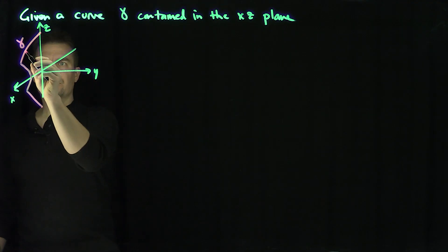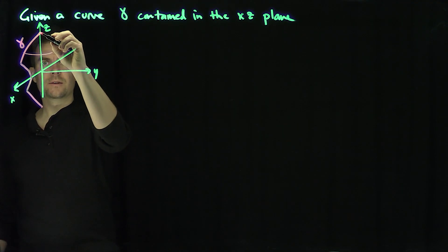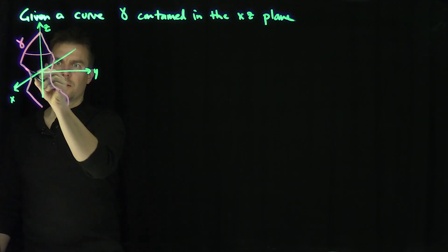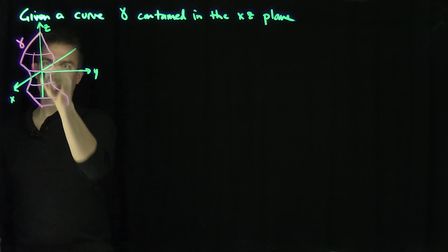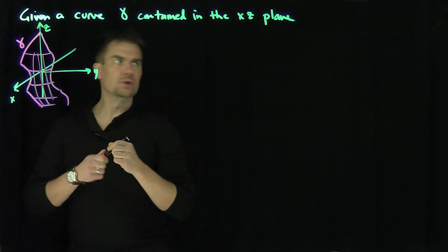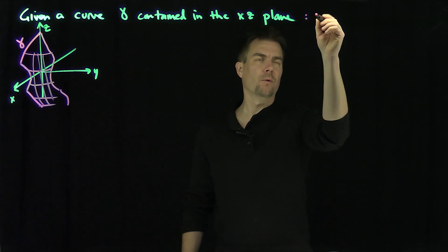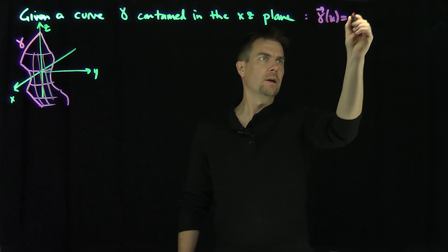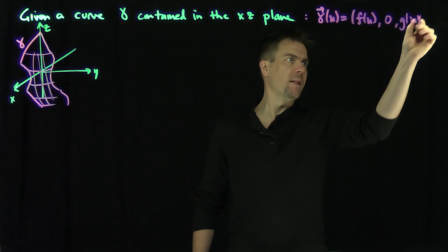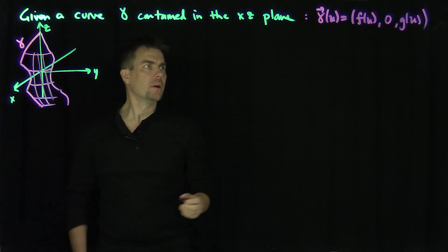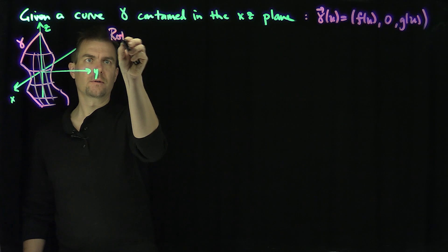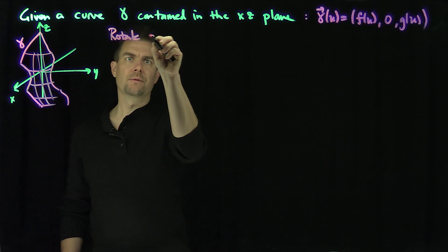What I'm going to do is rotate this curve around the z-axis. We're going to get another profile, and I'm going to rotate all the points on the surface and get a surface of revolution. This curve is going to be parametrized as gamma of u equals (f(u), 0, g(u)). Then we rotate this curve around the z-axis.